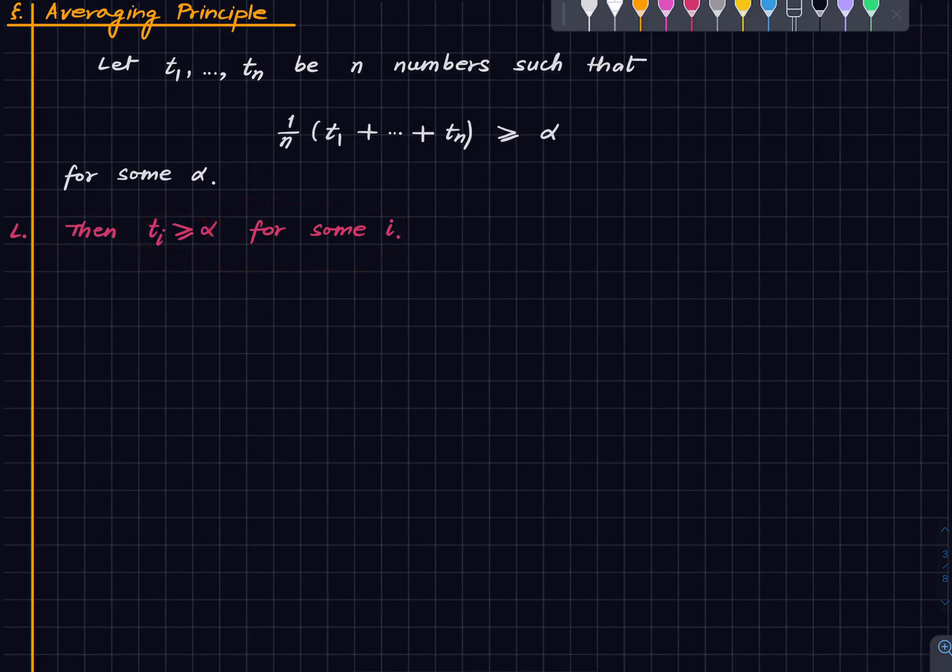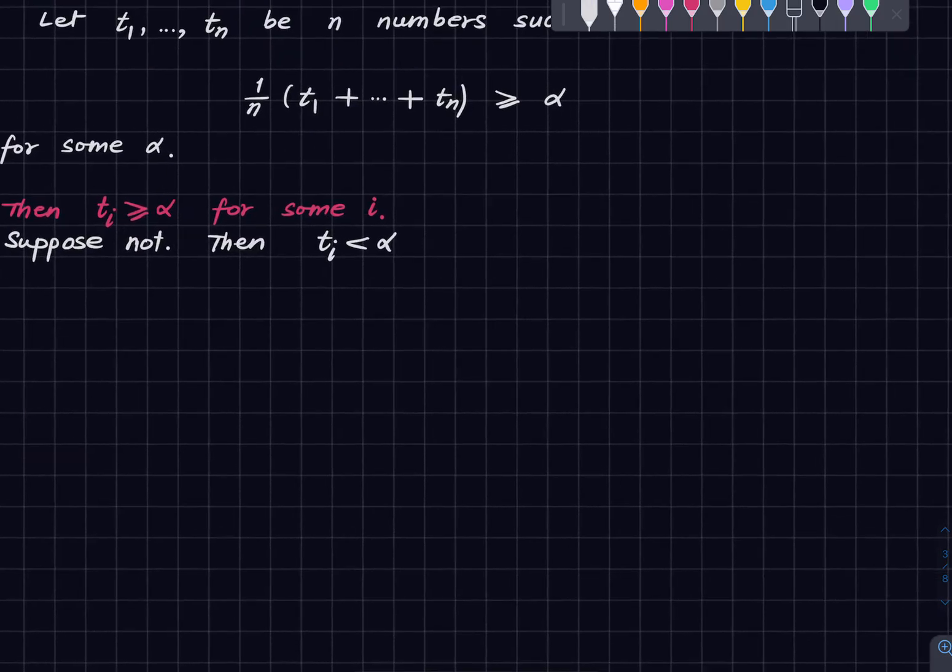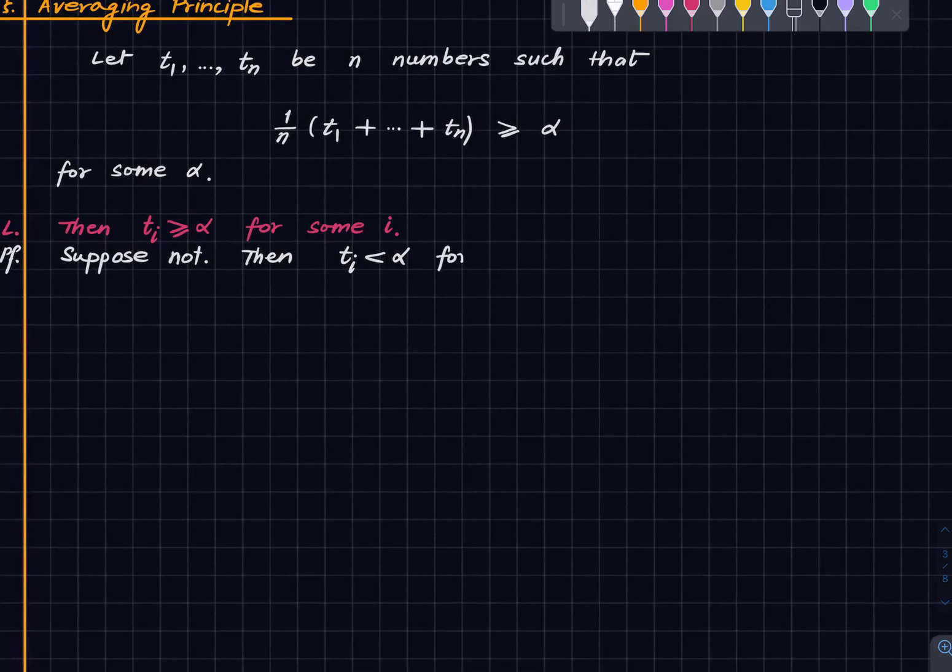And this is pretty clear because assume otherwise, suppose not. Then t_i is less than alpha for all i. Therefore if we take the sum this will be strictly less than n alpha.